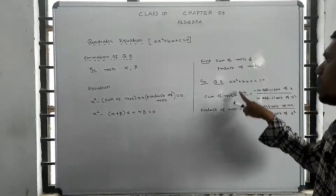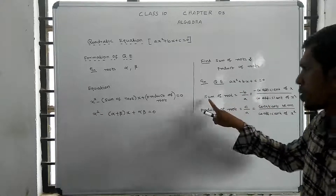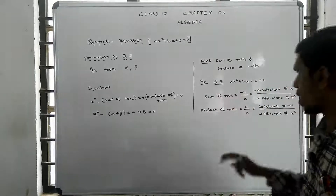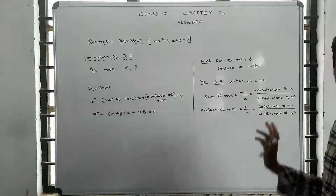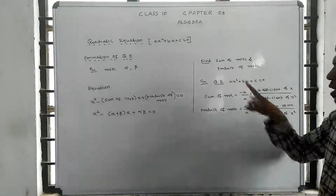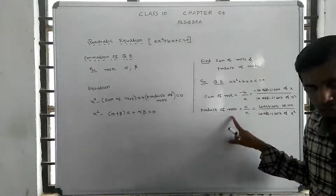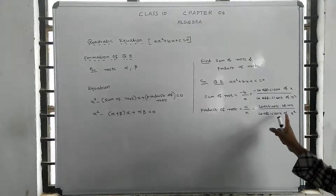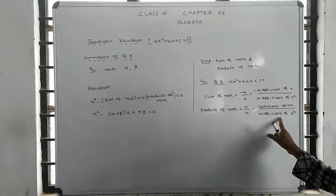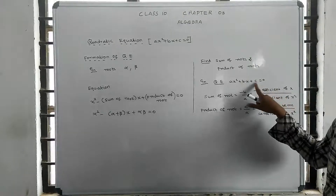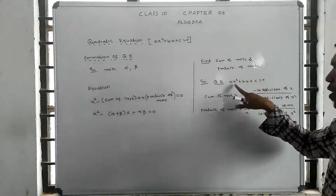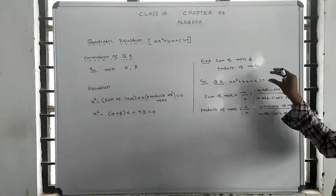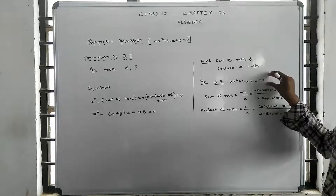Approaching the equation x squared plus bx plus c again, the formula for the sum of the roots gives us minus B by A. For the product of the roots, we take the constant C divided by the coefficient of x squared, which is A, giving us C by A.